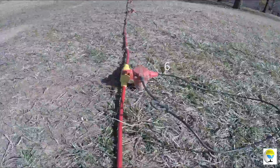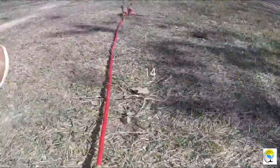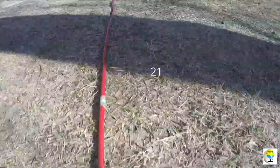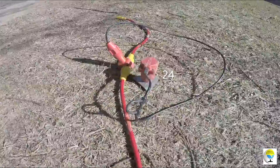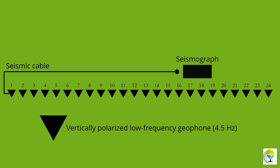24 or more geophones are typically used to acquire MASW data. Evenly spaced geophones, connected via a seismic cable, are connected to the seismograph — an instrument that records seismic field data. The seismograph is powered by a regular 12-volt car battery and controlled by a laptop.